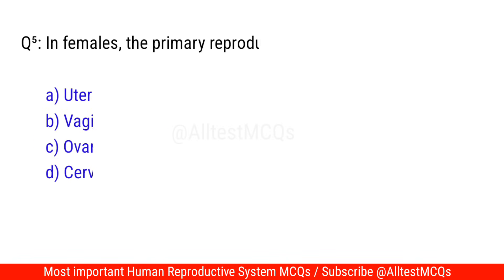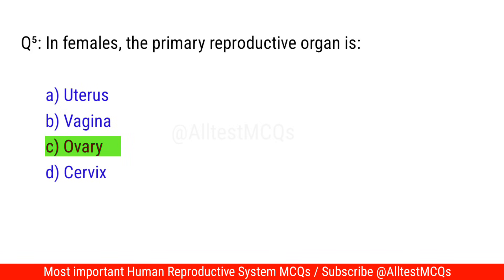Question No. 5: In females, the primary reproductive organ is? The correct option is C. Ovary.